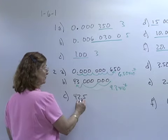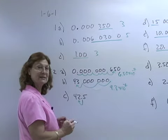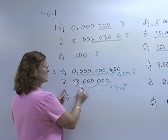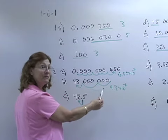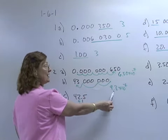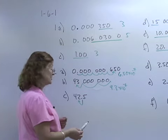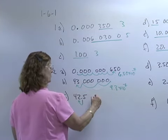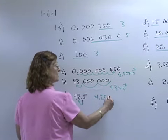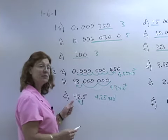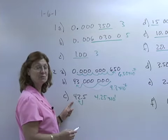In C, I'm only moving this decimal one place. And when I move these decimals, I have to have the same number of significant digits before and after, so that I'm not changing the number of significant digits. In C, the number is 4.25 times ten to the one. The number is greater than one and I move the decimal one place.